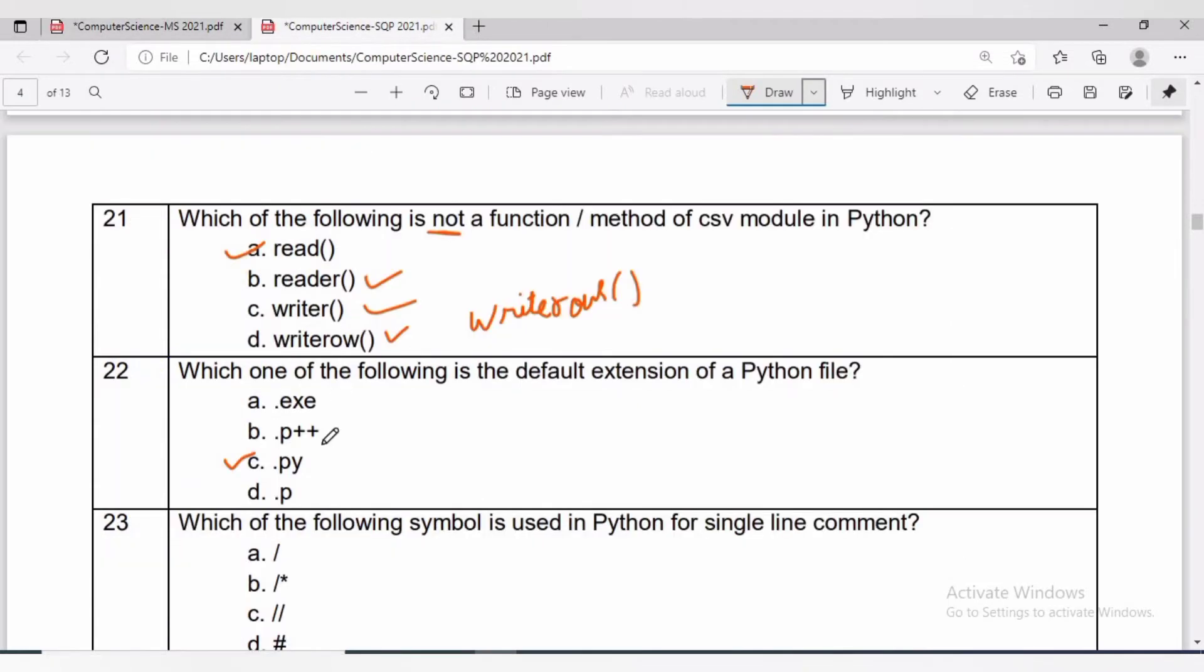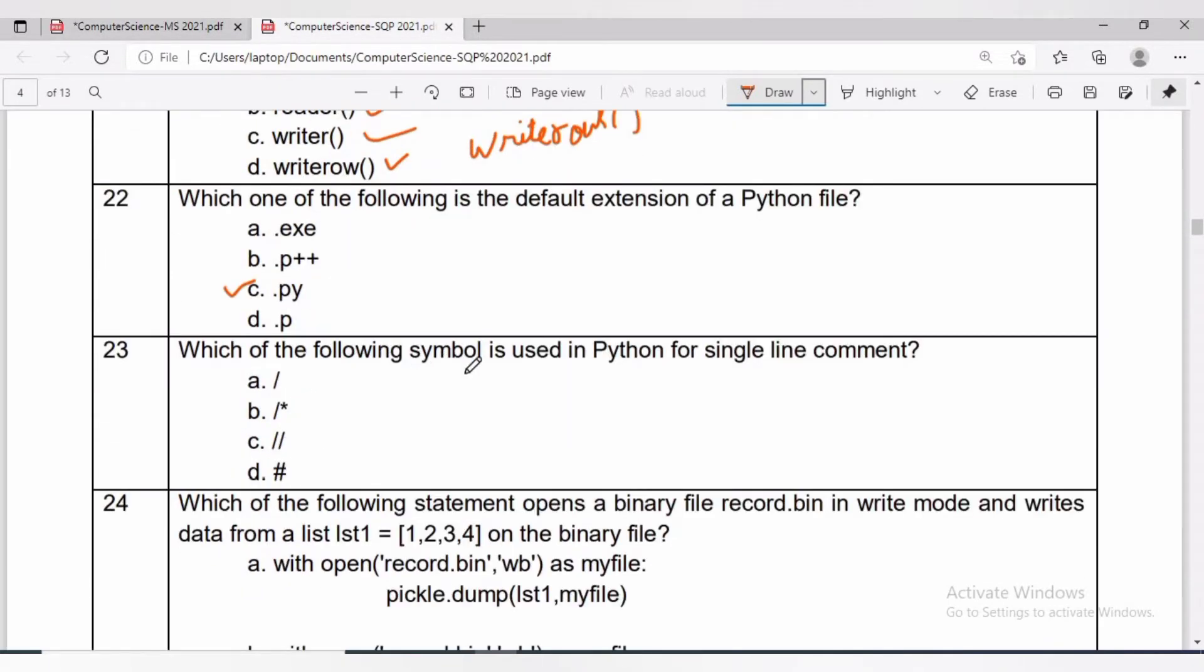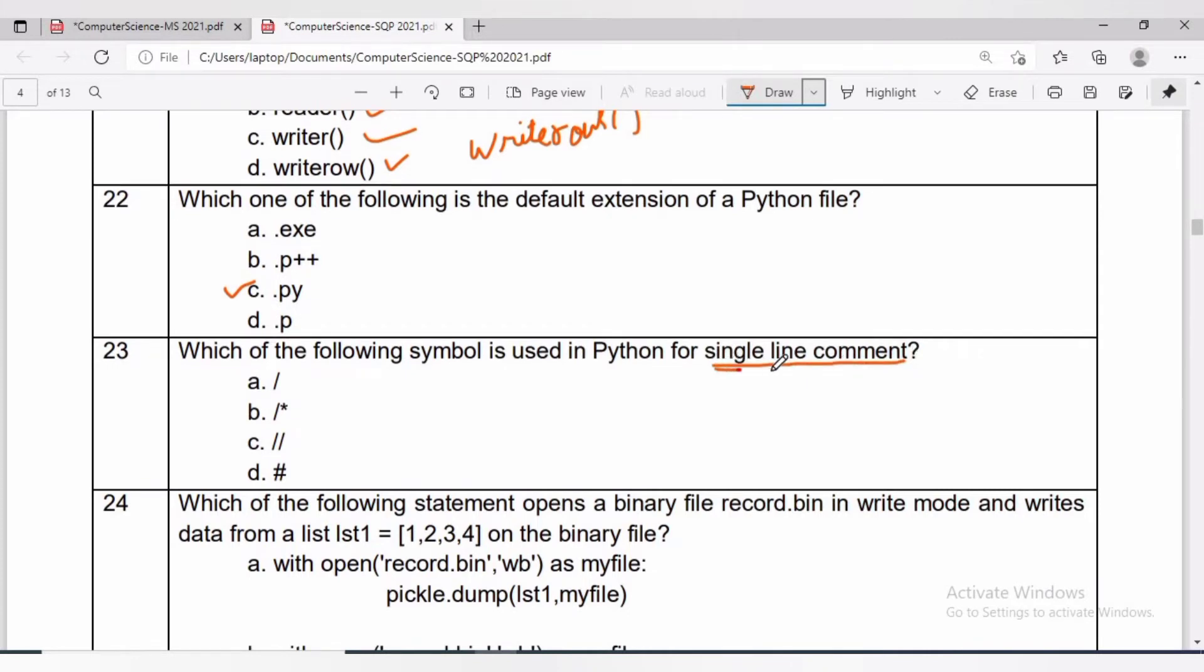Question number 23: which of the following symbol is used in Python for single line comment? Answer is hash sign. Comments can be single line or multi-line. For single line comments, we use hash sign. For multi-line comments, we use triple quoted strings or multiple hash style comments.